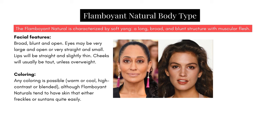The Flamboyant Natural is characterized by soft yang: a long, broad, and blunt structure with muscular flesh, which carries through to their facial features — broad, blunt, and open. Eyes may be very large and open or very straight and small. Lips may be straight and slightly thin or fuller. Cheeks will be taut. Any coloring is possible — warm or cool, high contrast or blended. Kibbe notes that Flamboyant Naturals tend to have skin that freckles or suntans easily, though this is directed toward a specific grouping of women, so take it if it works.